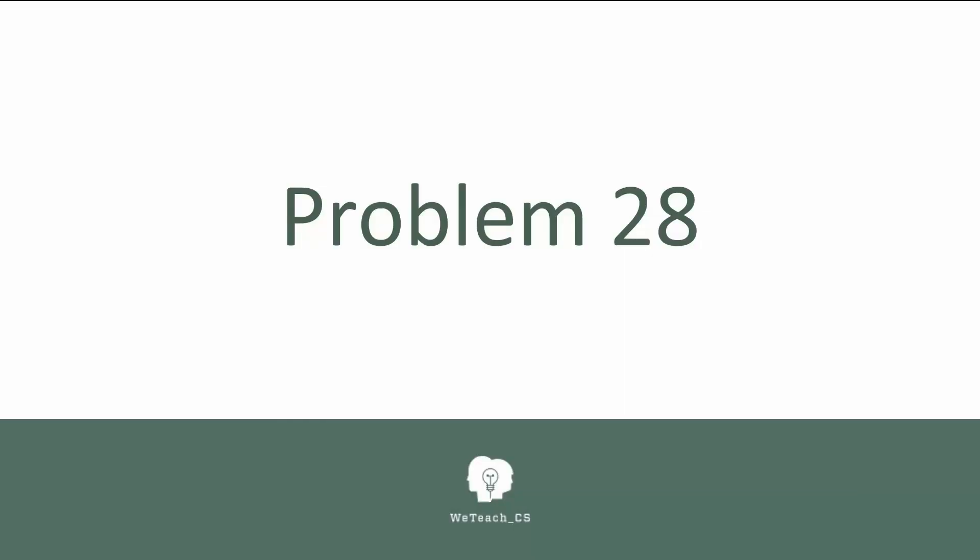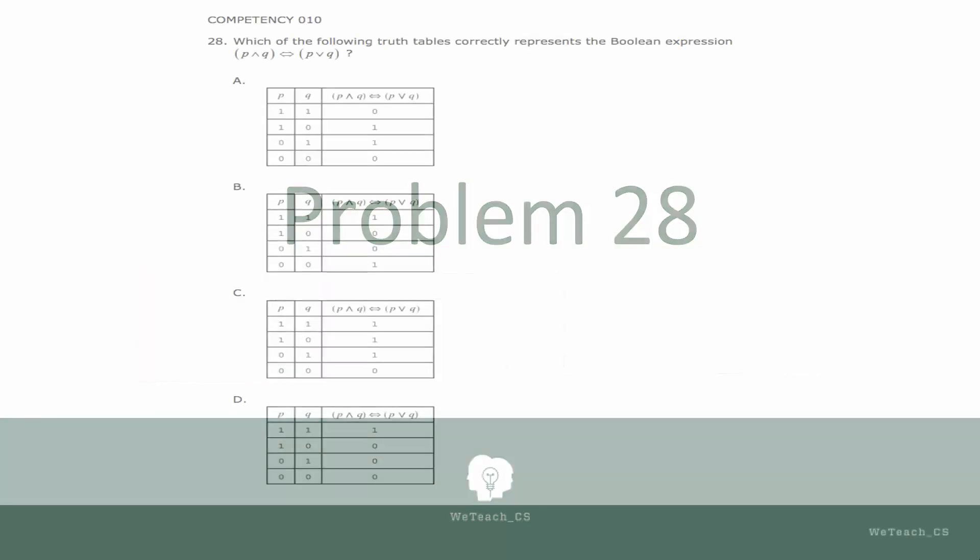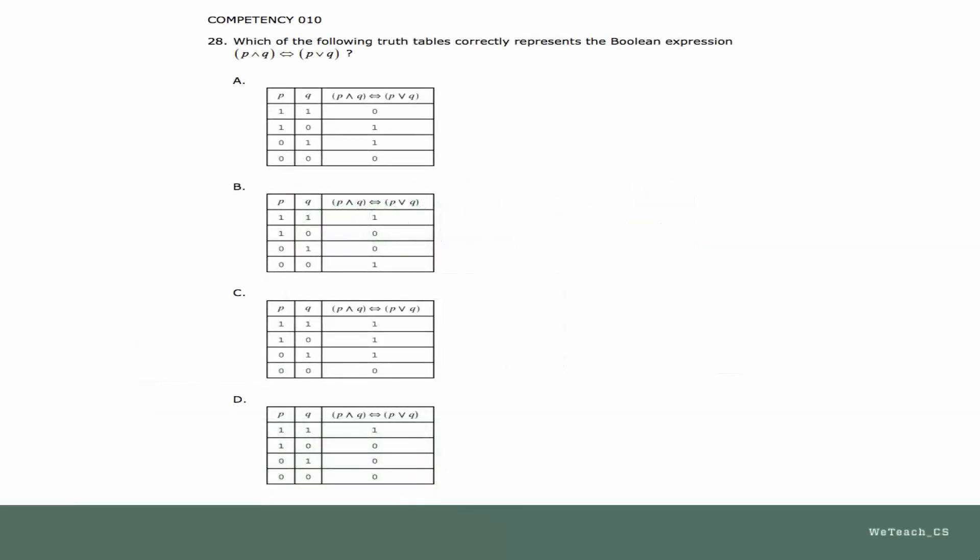Problem 28 on the practice test measures your understanding of the AND, OR, and biconditional operators used in Boolean logic. The question seeks to find the correct truth table for this expression, which uses the Boolean values P and Q.